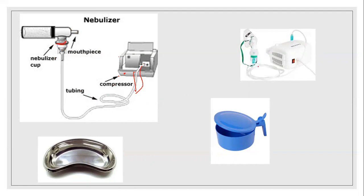So this is a nebulizer with a nebulization mask. We put the nebulization mask on the nebulizer. This is the connection area for the plug. This is the on and off button. This is the filter. The nebulizer is connected to the tubing — that is the nebulizer cup holder. This is the nebulizer cup, into which we have to pour the medication or disinfectant solution.